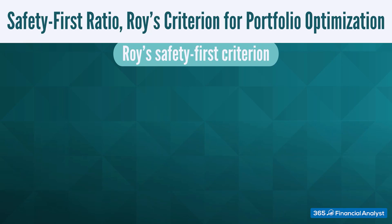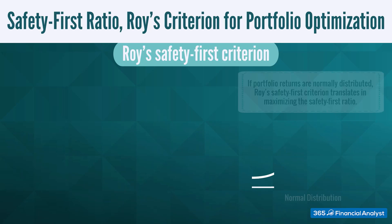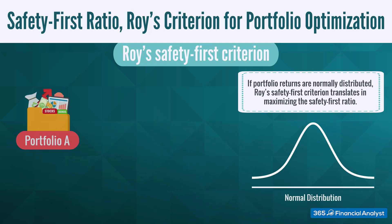Now let's introduce Roy's safety first criterion. According to this rule, an optimal portfolio minimizes the probability of obtaining a return that goes under a certain minimum acceptable level. If portfolio returns are normally distributed, Roy's safety first criterion translates into maximizing the safety first ratio.